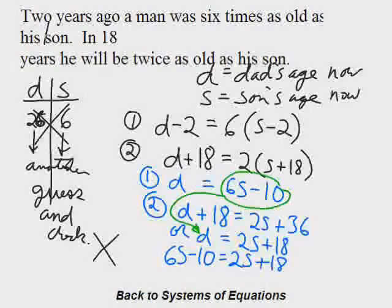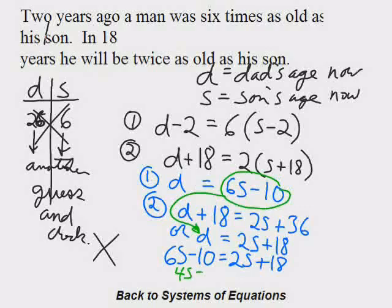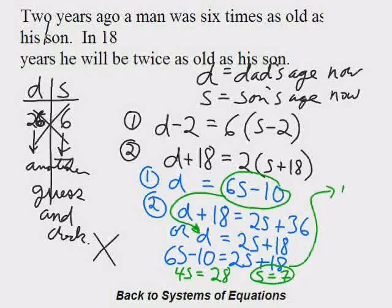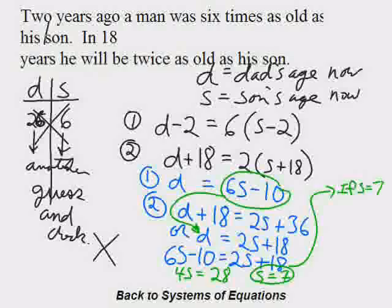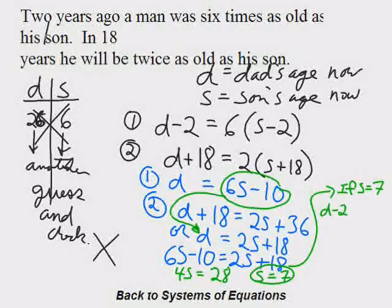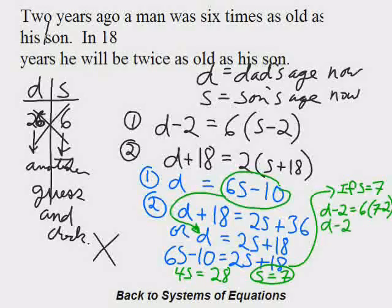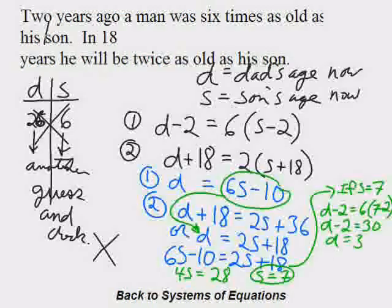Look at that. Equation 1 from the first sentence, equation 2 from the second sentence. D is the dad's age now, so D minus 2 would be the dad's age two years ago. S is the son's age now, so S minus 2 would have been the son's age two years ago. You've got to write these things down. They're not that tough, you've just got to practice.